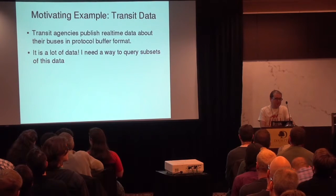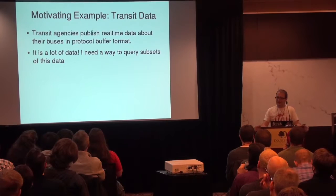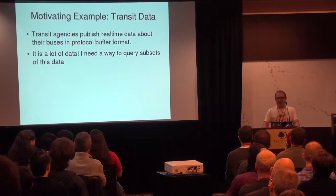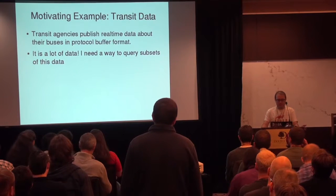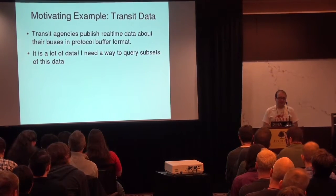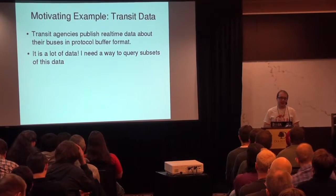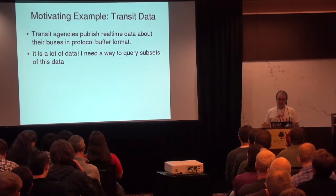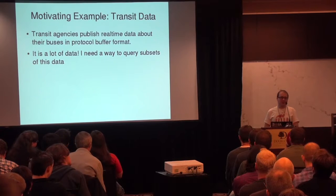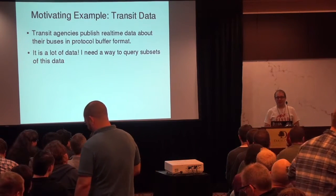My particular little language was motivated by a specific example of transit data. In addition to being a Rust enthusiast, I'm a transit enthusiast, and I like to know all sorts of obscure facts about the transit system in my hometown of Boston. The transit agency in Boston publishes all sorts of data in open formats, including real-time locations for all the buses and trains in protocol buffer format. You just download it from a URL, and it gets updated every 30 seconds. I have a script set up on my little rented server to go and download this data every 30 seconds and keep a giant archive so I can go back and see how things were working during a terrible snowstorm.